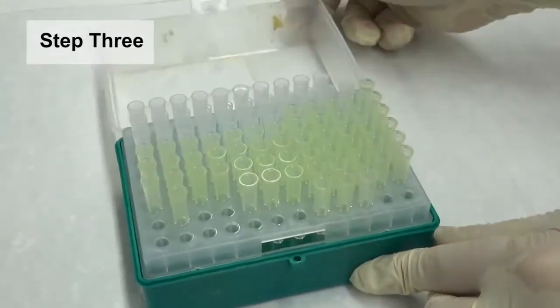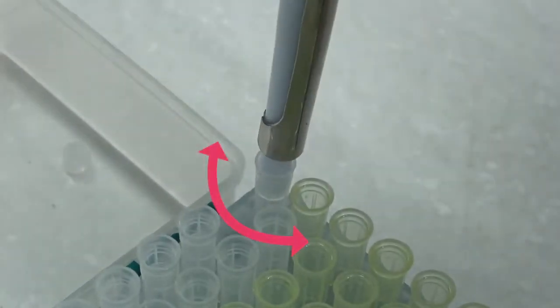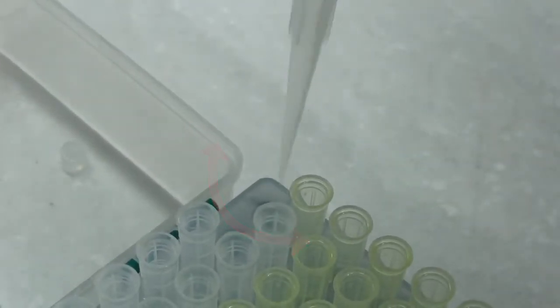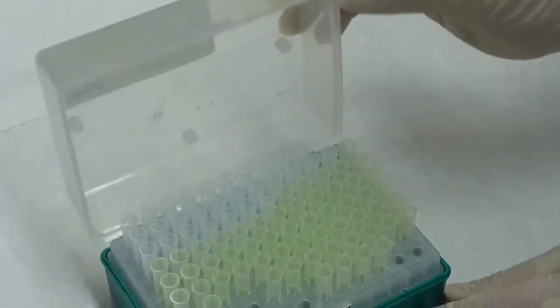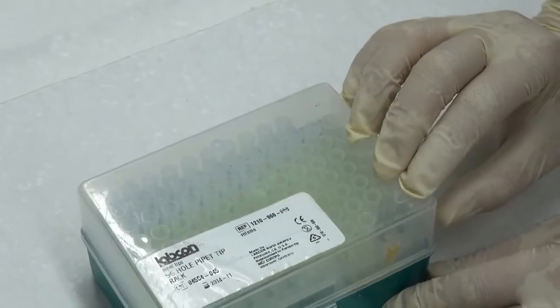Step 3. Open the lid of the tip box. Fit a tip to the end of the shaft with a slight twist to ensure a good seal. Close the lid of the tip box to prevent dust and contamination.